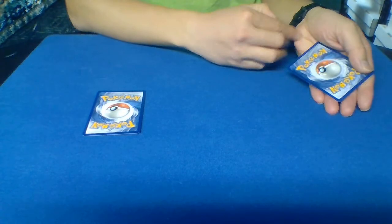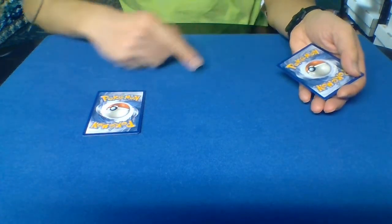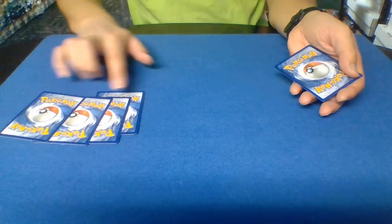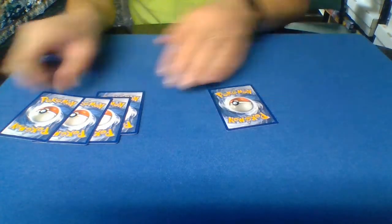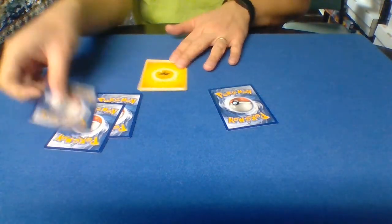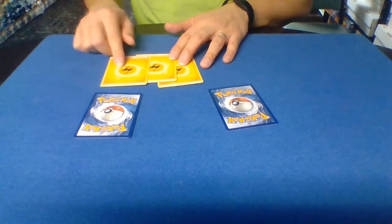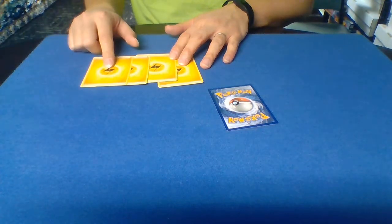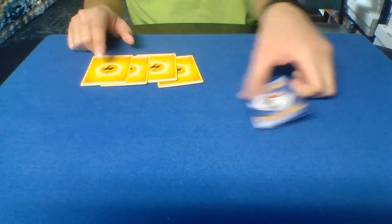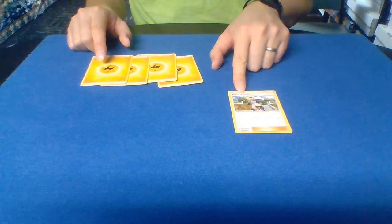Did you see it jump? Because look, if we take a look, there's only one card here, and then there's actually four cards over here. And if we take a look, these all happen to be the energy cards. And then now this happens to be the Roller Skater Trainer.